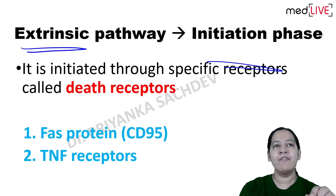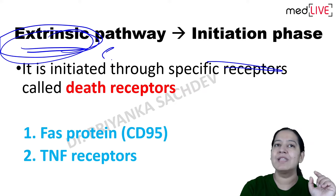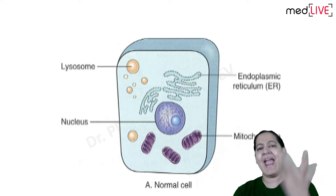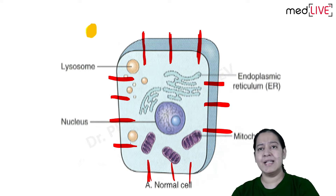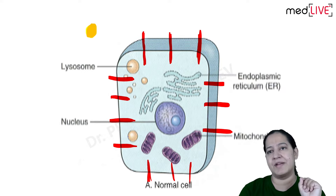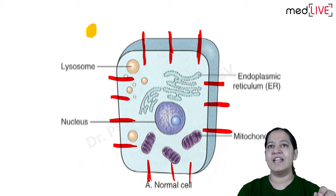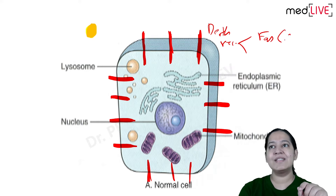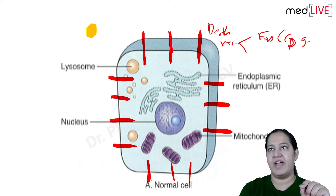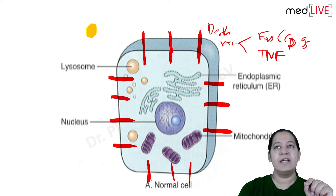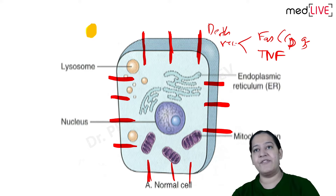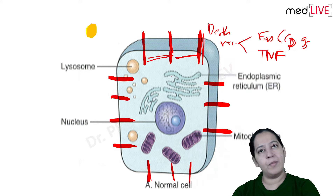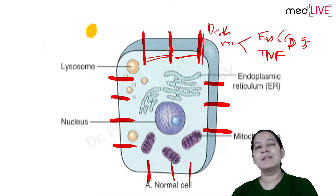Extrinsic pathway - initiation phase. It is called extrinsic because the signals come from external. This is a cell - any cell of the body from head to toe. On the surface of these cells, death receptors are present. These death receptors are of two types: FAS (also known as CD95) and TNF (tumor necrosis factor) receptor. Normally they are present on all body cells at a distance from each other.